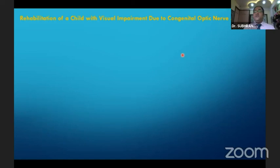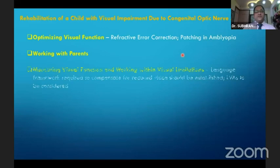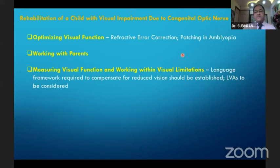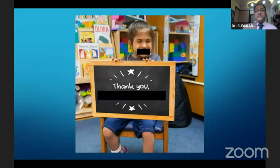Finally, regarding rehabilitation of a child with visual impairment due to congenital optic nerve anomalies: optimizing visual function, correcting refractive error at the earliest, and patching if there is amblyopia are key. Working with parents — breaking the news and helping them understand the gravity of the situation — is essential. Measuring visual function, working within visual limits, establishing language frameworks to compensate for reduced vision, and considering low vision aids are all important. Ensuring that impaired vision does not lead to developmental delay and providing information resources for parents and children are the final steps. Thank you very much.